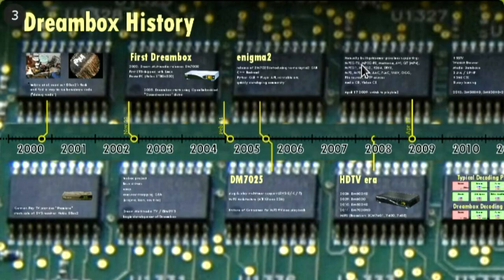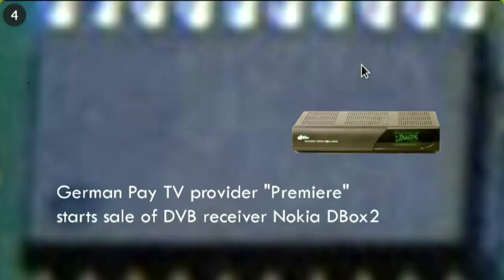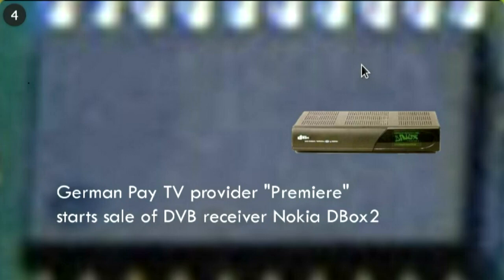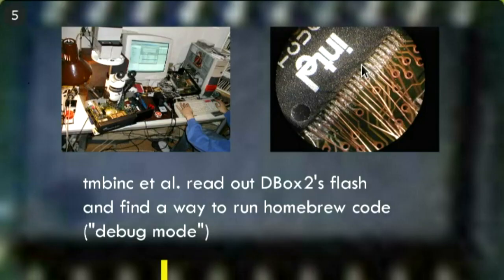A brief abstract of where we're coming from. It all started with the German pay TV monopolist Premiere — now it's Sky, actually. They started renting out a Nokia D-Box 2, a satellite receiver box running a proprietary Linux or Unix derivative by Beta Research, and its GUI was entirely Java-based. A lot of people complained because it ran slow and was missing features that were announced but never implemented.